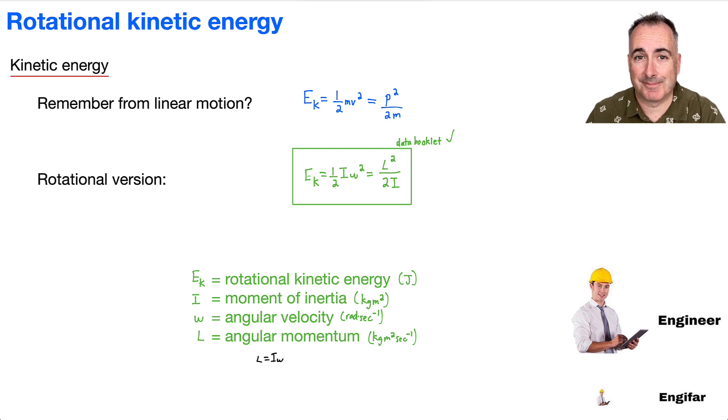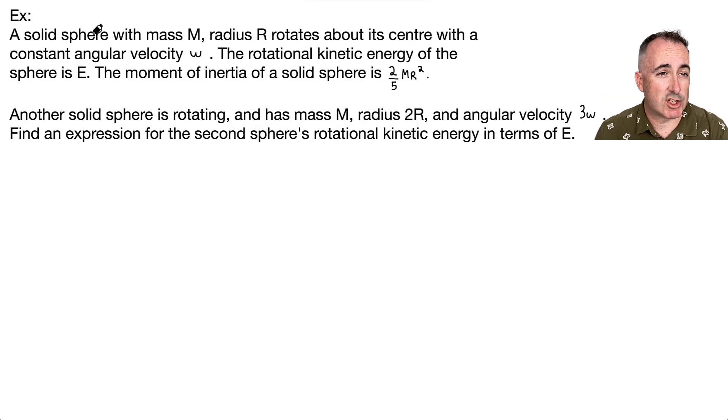Let's do an example. We have a solid sphere with mass M, radius R, and it rotates about its center with a constant angular velocity omega. The rotational kinetic energy is called E. The moment of inertia of a solid sphere is two-fifths MR squared. So far, nothing crazy.